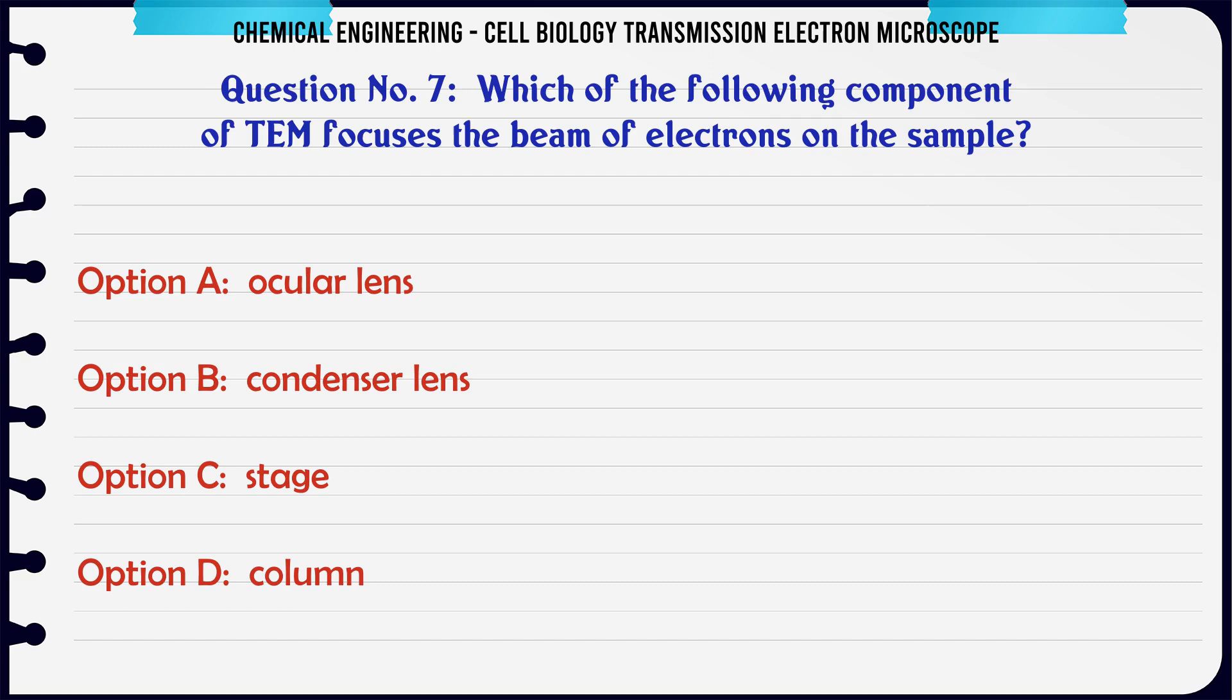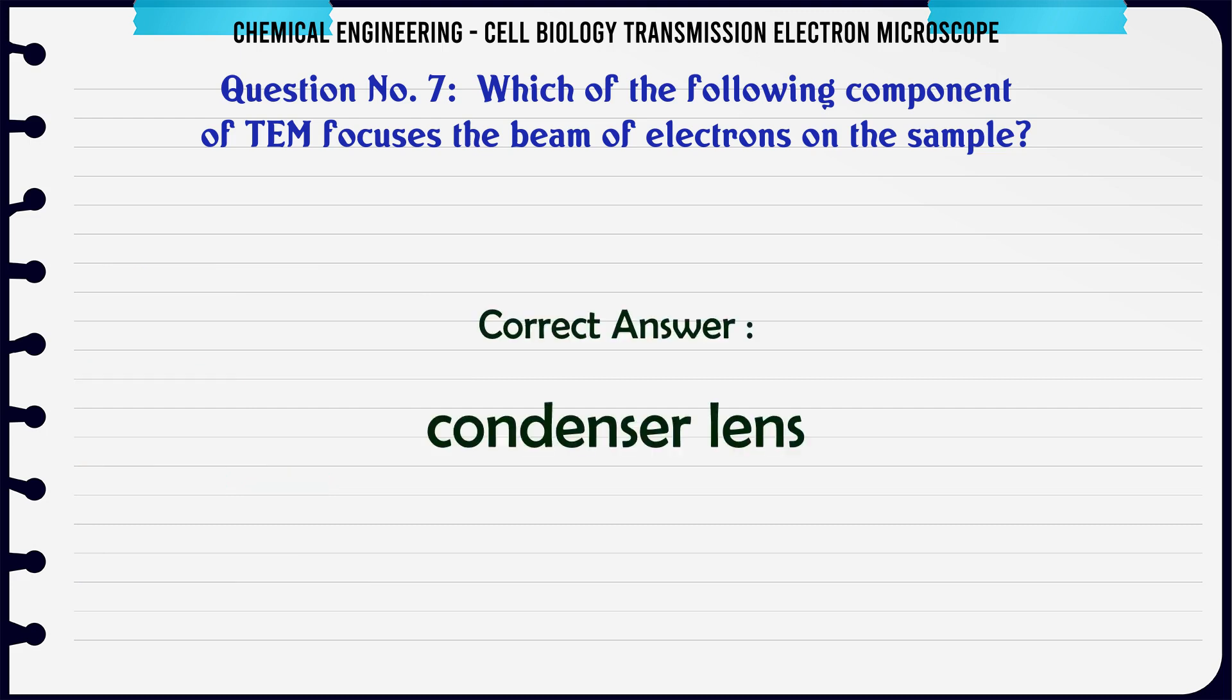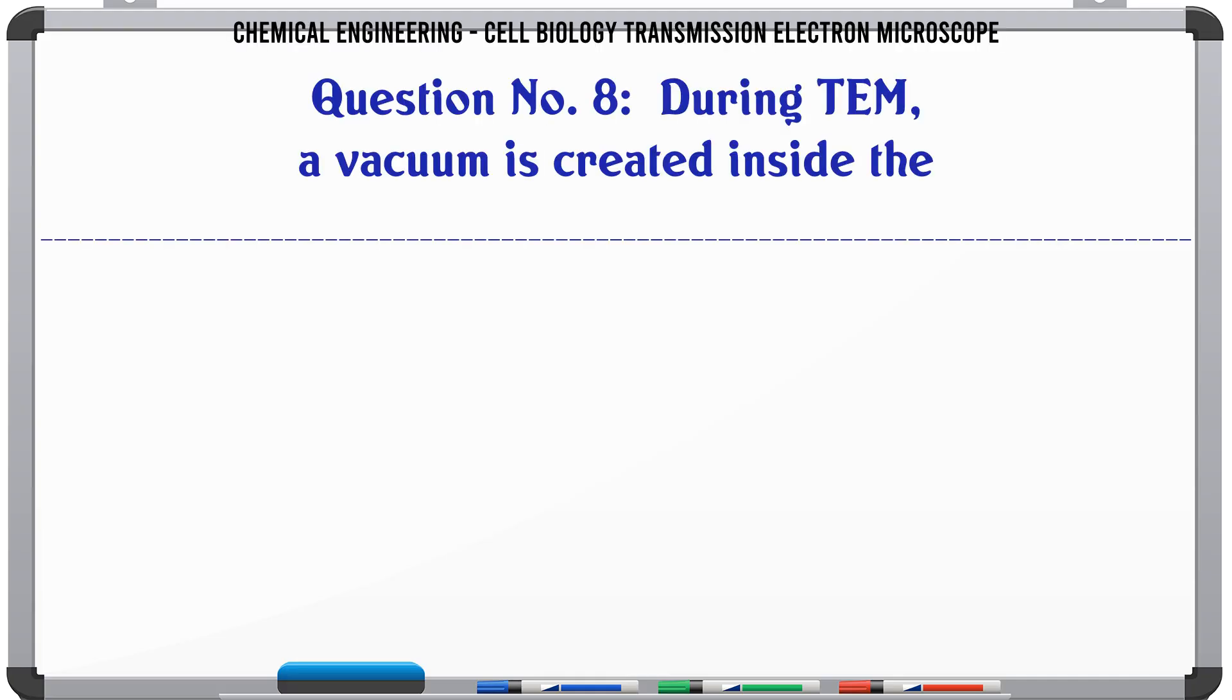Question 7: Which of the following components of TEM focuses the beam of electrons on the sample? A. Ocular lens, B. Condenser lens, C. Stage, D. Column. The correct answer is condenser lens.